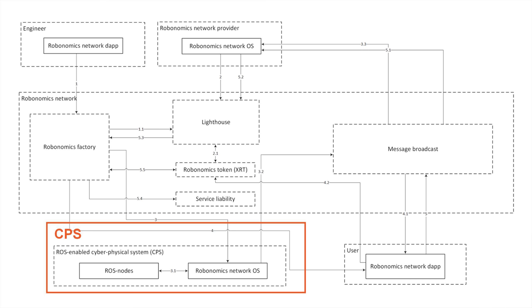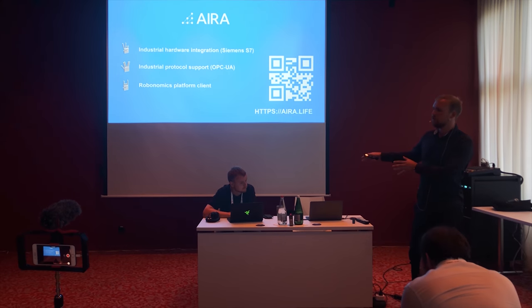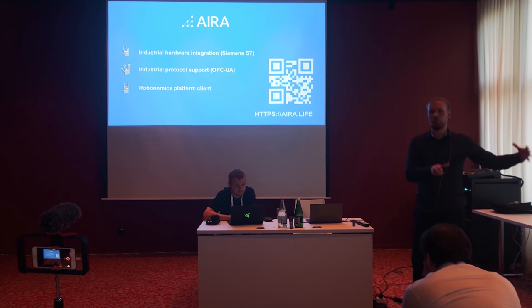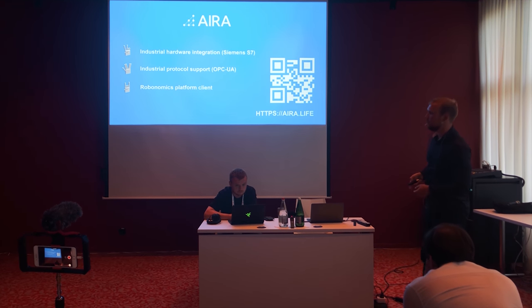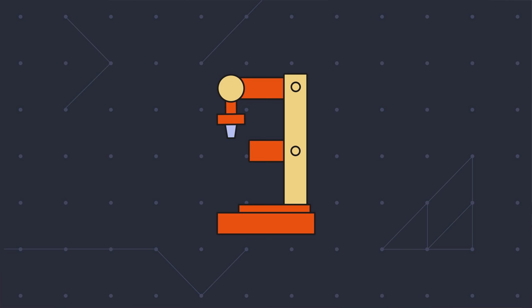Finally, the last part of the platform is the cyber-physical system — it's the production, the industrial hardware. We use the Robot Operating System as a standard for open hardware communication. For this reason, we introduce a Linux system distribution called AERA, which contains industrial hardware integration and support for industrial protocols like OPC UA. It is also the Robonomics client, meaning AERA helps integrate industrial software and hardware with the new digital world like the Ethereum platform.